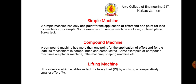Then compound machine. It is a machine which has more than one point for the application of effort and for the load. For example, a planer machine, lathe machine, or shaping machine. In the screw jack, if you apply the load, the vehicle will be lifted — there is one point of application and one point to lift the load.